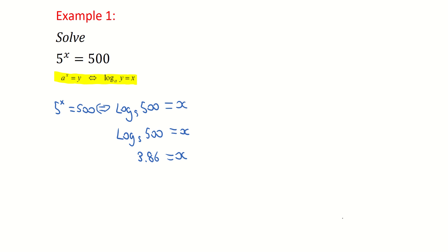So what does that mean? It's telling me that 5 to the power of 3.86 is equal to 500. I've rounded to two decimal places so it's slightly approximate, but that's what the logs are finding.